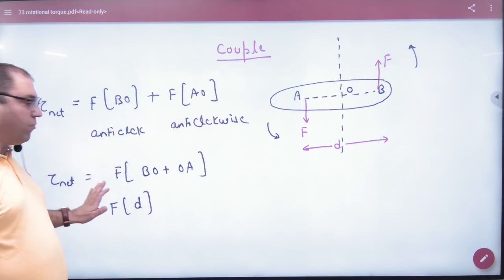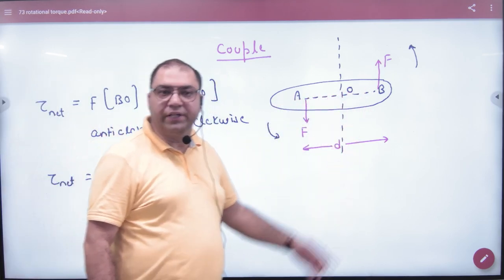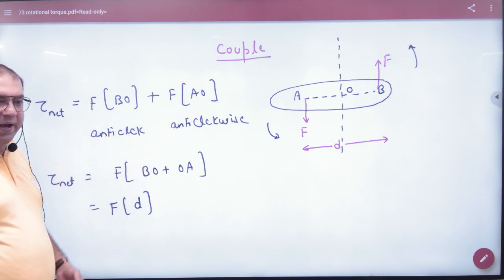So here F is common - DO plus AO, DO plus AO, which is D. So what will the net torque be? Force, either force, any force, into perpendicular distance between forces. So F force and the perpendicular distance is D. So what will the torque value be? F into D.